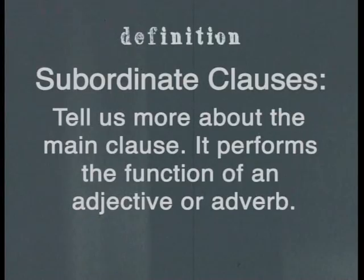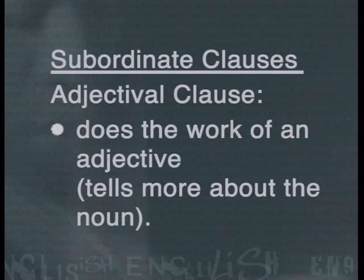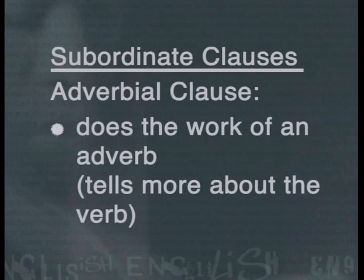Let's begin this lesson on subordinate clauses with a definition. A subordinate clause is the clause that tells us more about the main clause. It performs the function of an adjective or adverb. There are two types of subordinate clause: an adjectival clause, which does the work of an adjective — that is, it tells us more about the noun — and an adverbial clause, which does the work of an adverb, in other words, it tells us more about the verb.